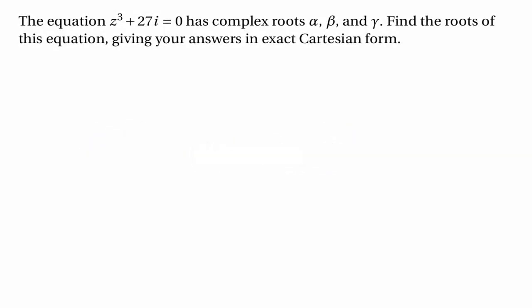It tells us that the equation z cubed plus 27i equals zero has the complex roots alpha, beta, and gamma. We're told to find the roots, giving our answers in exact Cartesian form.